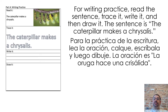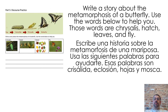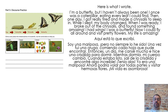Stage 5. For writing practice, read the sentence, trace it, write it, and then draw it. The sentence is: the caterpillar makes a chrysalis. Stage 6: Write a story about the metamorphosis of a butterfly. Use the words below to help you. Those words are chrysalis, hatch, leaves, and fly.